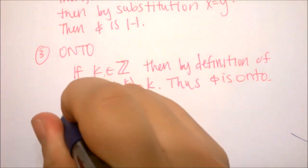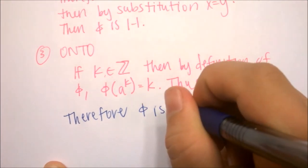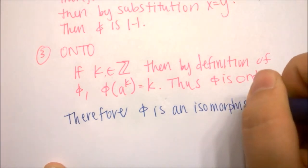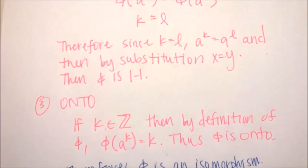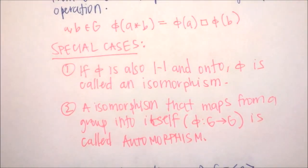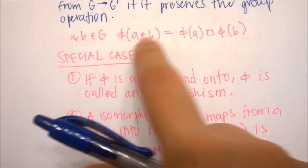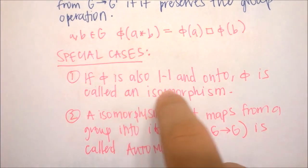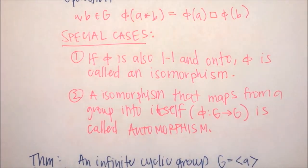We've now shown that our mapping preserves the operation, is one-to-one, and is onto — the three criteria for a mapping to be an isomorphism. So phi is onto, and therefore phi is an isomorphism. That concludes our proof. Remember, if you ever need to prove something is isomorphic, you have three things to show: it preserves the operation, it's one-to-one, and it's onto.